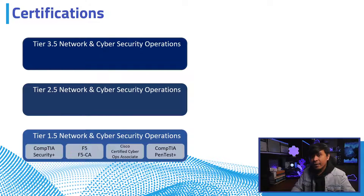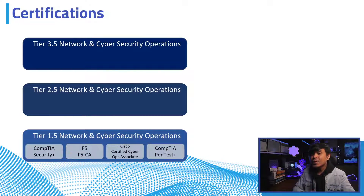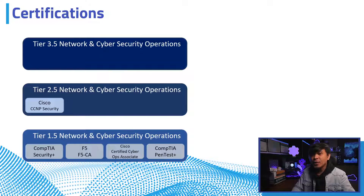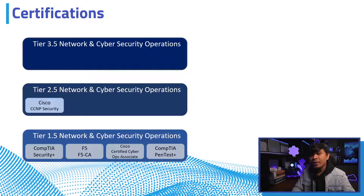Moving to Tier 2.5 — the professional/mid-level. First is the Cisco Certified Network Professional (CCNP) Security, which makes the most sense since you're already CCNA and just moving up a level. The CCNP Security consists of two exams: the SCOR core exam and one concentration exam. Check the link below for the best CCNP exam combinations.